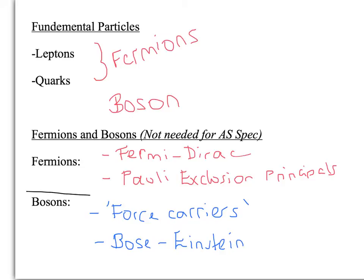Bosons abide by Bose-Einstein statistics instead of the Fermi-Dirac ones — that's basically the key distinction. The reason this isn't on your spec is that it can get quite complicated when you have multiple quarks in what's called a composite particle. But that's just for those of you who are interested.